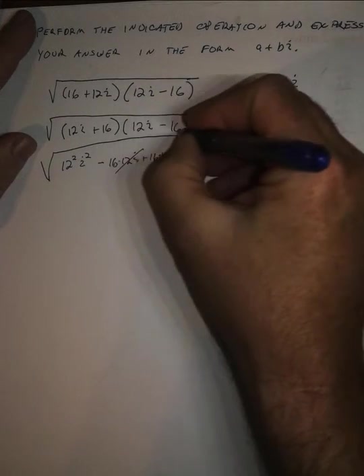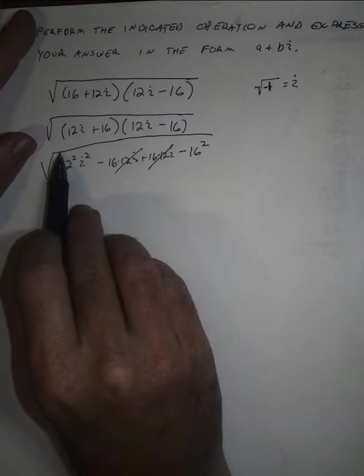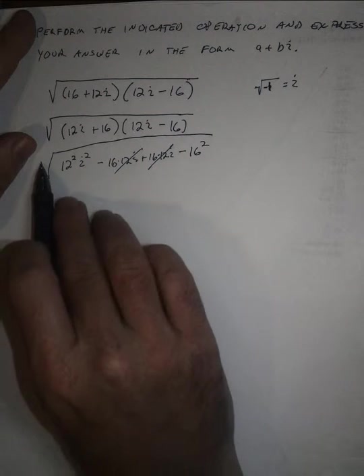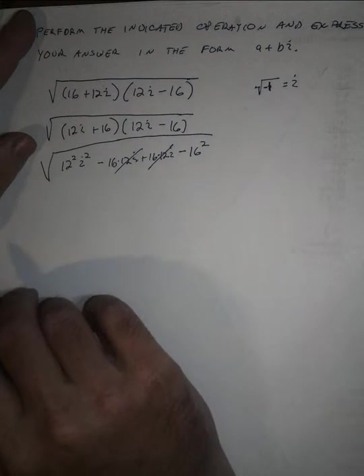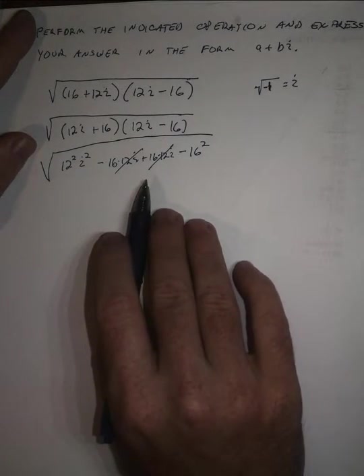All of this is under the radical. The radical bar is considered a grouping symbol. Anything underneath this bar here needs to be done first before you take the principal square root. And so that's why we're simplifying and performing the multiplication first.